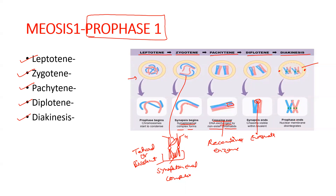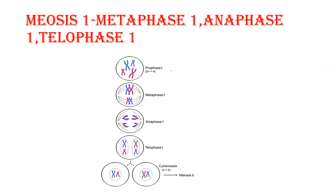After diplotene, in diakinesis, the nuclear envelope breaks down, the nucleolus disappears, the centrosome moves to the opposite pole, and condensation of chromosomes is complete — prophase one ends. In metaphase one, chromosomes align at the metaphase plate and spindle fibers attach. In anaphase one, spindle fibers shorten and chromosomes are pulled apart. In telophase one, the nuclear envelope reassembles and a furrow forms. Then cytokinesis divides one cell into two haploid cells, completing meiosis one.